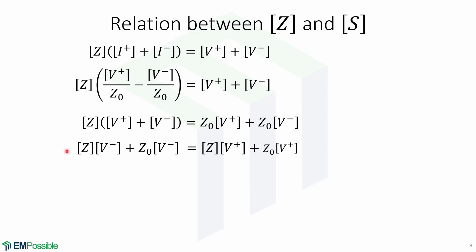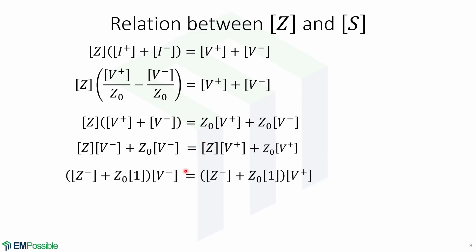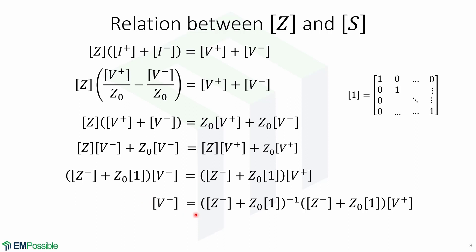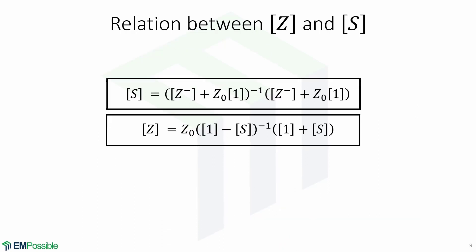Then, we group the V minus matrices here and the V plus matrices on the right side. Then, we factor out the V minus matrix. We do the same for the V plus matrix, in which the identity matrix has ones along the main diagonal and zeros everywhere else. Now, solving for V minus leads to this expression. Finally, this is the relation between the impedance matrix Z and the scattering matrix S.